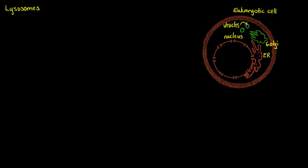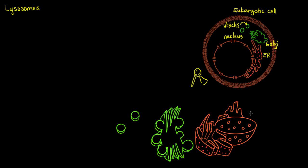The Golgi apparatus is going to be producing lysosomal vesicles. Looking more closely, we have the nucleus with its rough and smooth endoplasmic reticulum, and the Golgi apparatus right next to it. The smooth ER is here, the rough ER is here with ribosomes studded all over it, then we have the Golgi apparatus and its vesicles. The Golgi apparatus will release lysosomal vesicles, but they aren't going to be full lysosomes just yet.